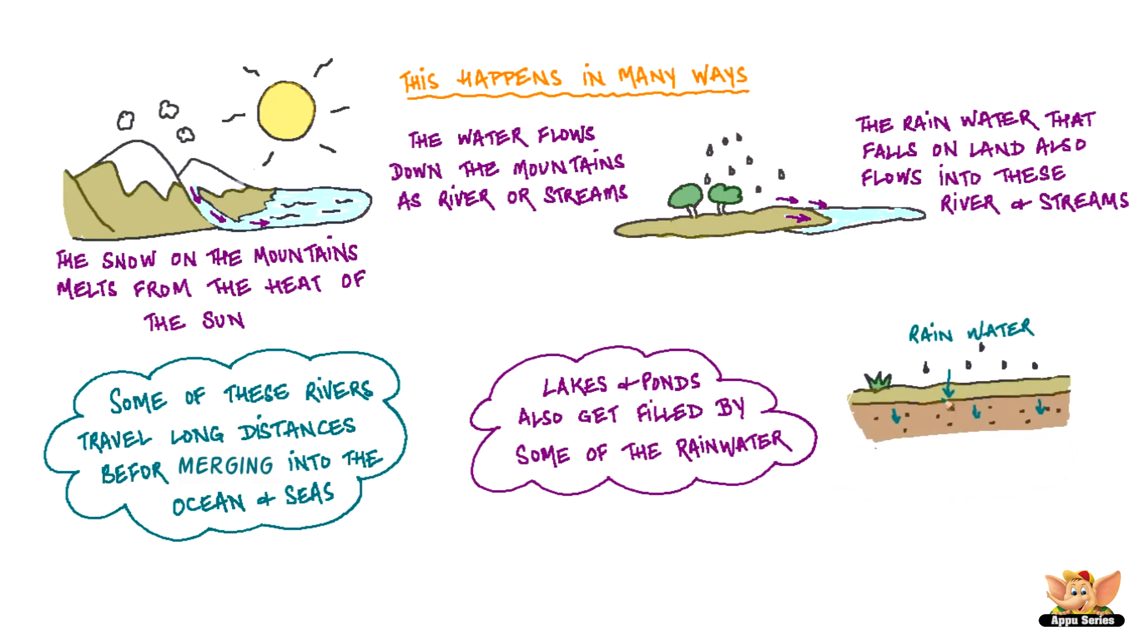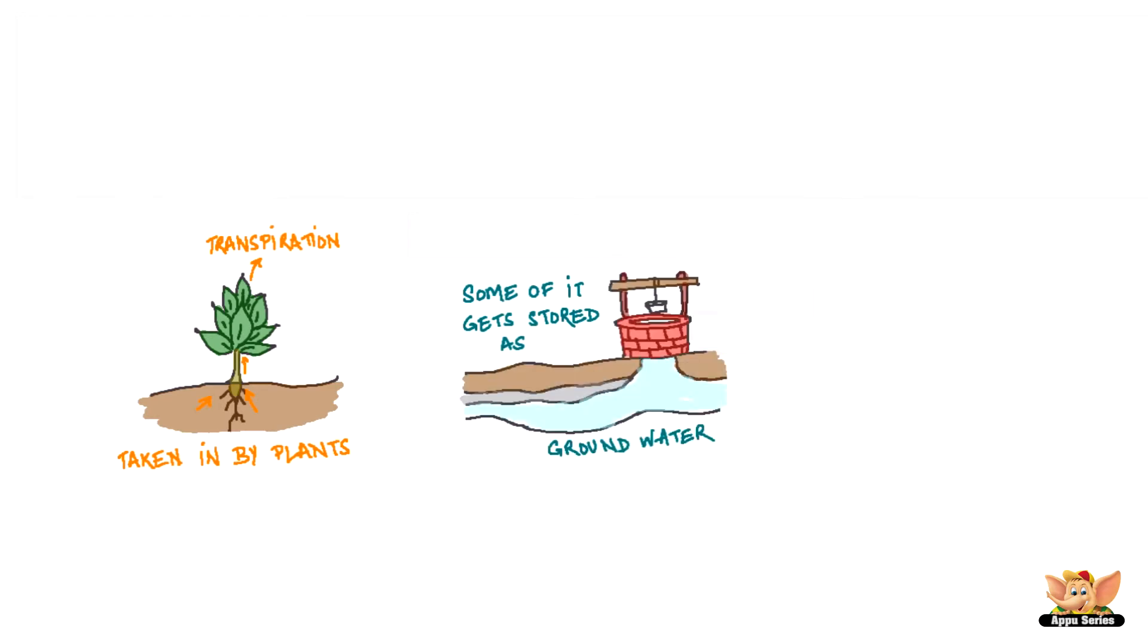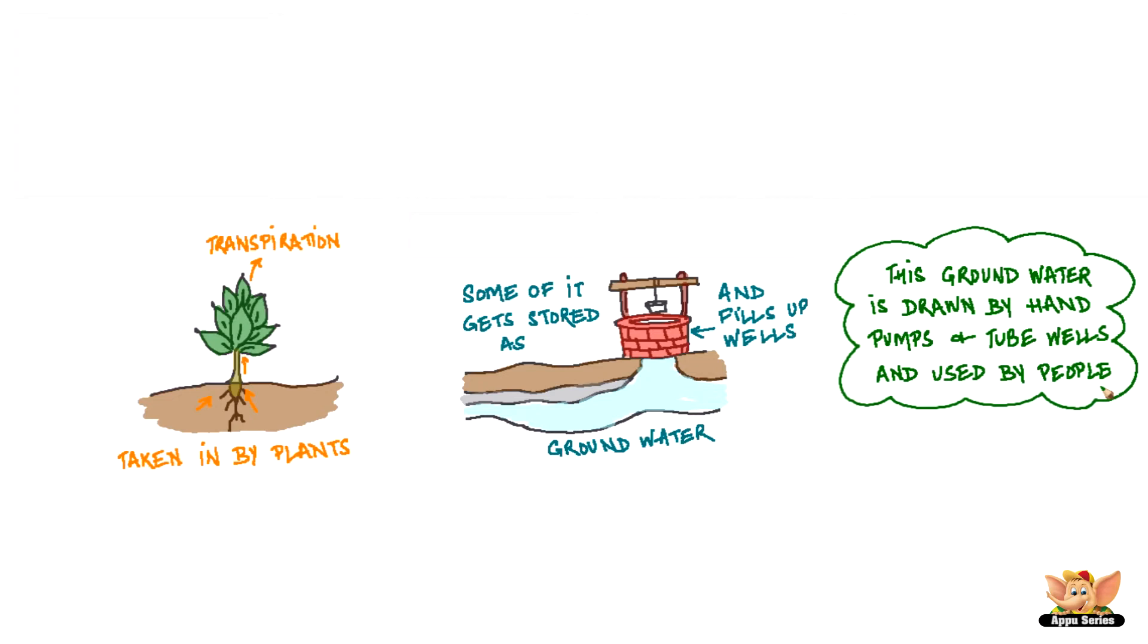The rain water is also absorbed by the soil. Some of it is taken in by plants and comes out in the process of transpiration. Some of it gets stored as groundwater and fills up wells. This groundwater is drawn by hand pumps and tube wells and is used by people.